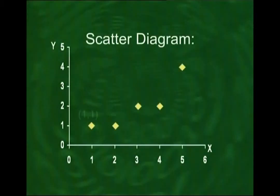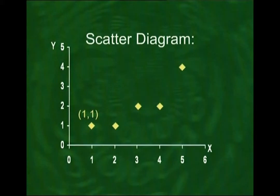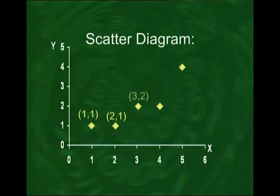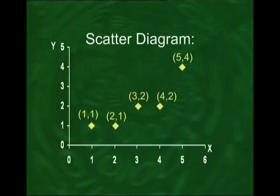A scatter diagram is a very simple diagram. You take the independent variable X along the X-axis and the dependent variable Y along the Y-axis, and you simply plot all those ordered pairs as points on the graph paper. For subject A the ordered pair (X, Y) is (1, 1); for subject B it is (2, 1); for subject C, (3, 2); for subject D, (4, 2); and for subject E, (5, 4). The scatter diagram is a very useful tool to judge the nature of the relationship between X and Y.